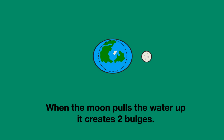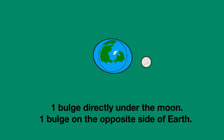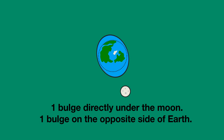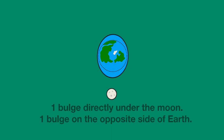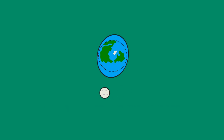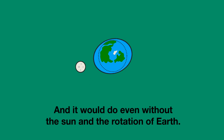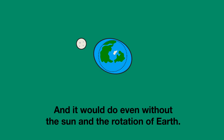When the Moon pulls the water up, it creates two bulges of water: one bulge directly under the Moon, and one bulge on exactly the opposite side of Earth. The Moon causes these two bulges, and it would do so even without the Sun and even without the rotation of Earth.